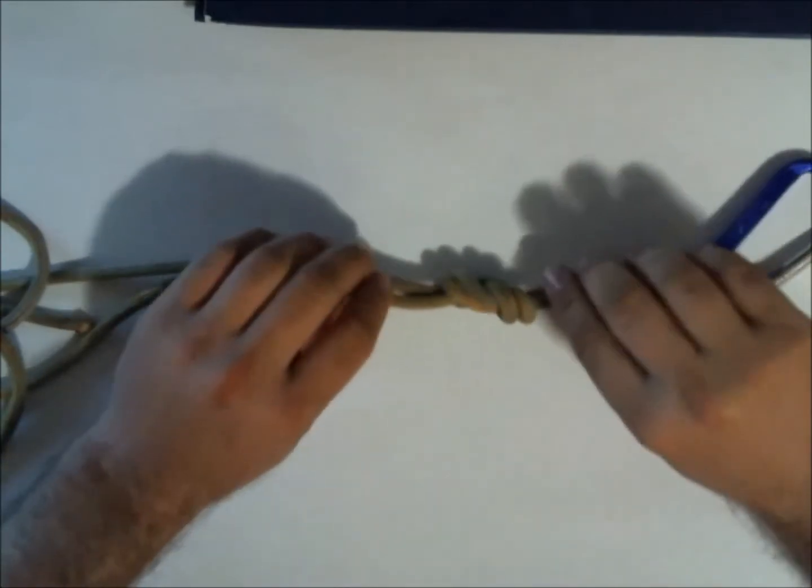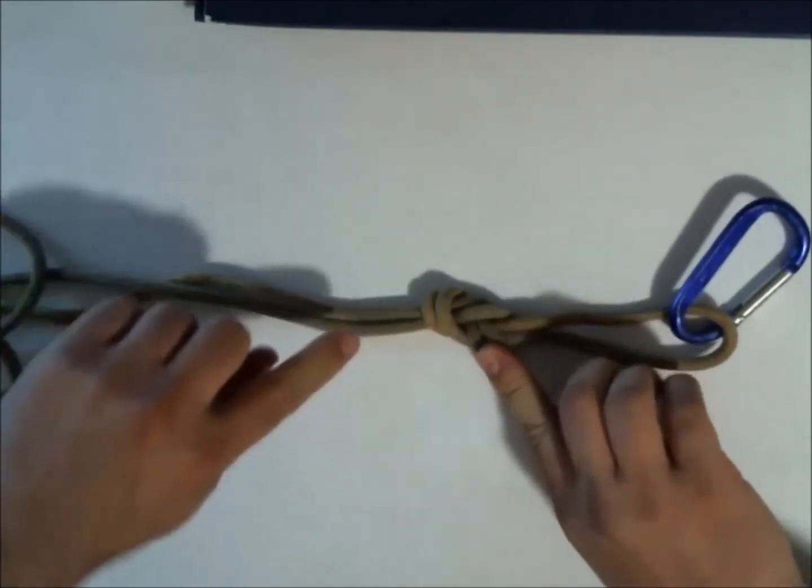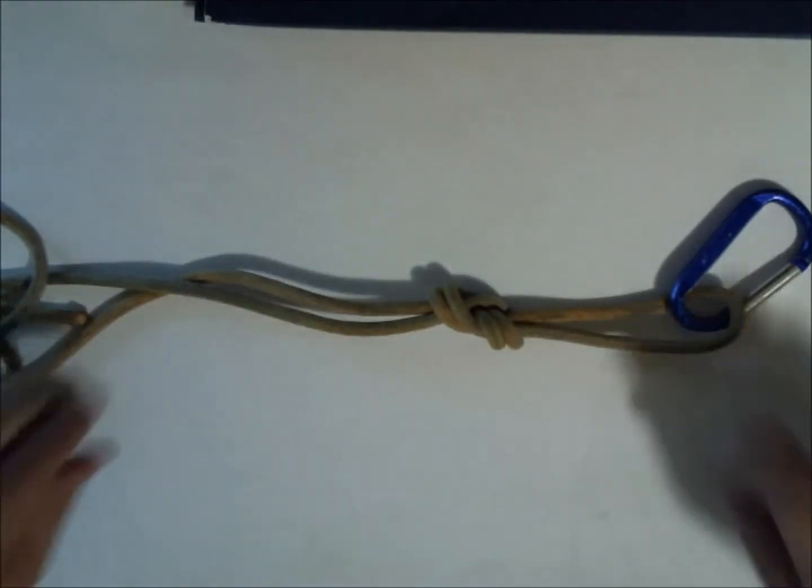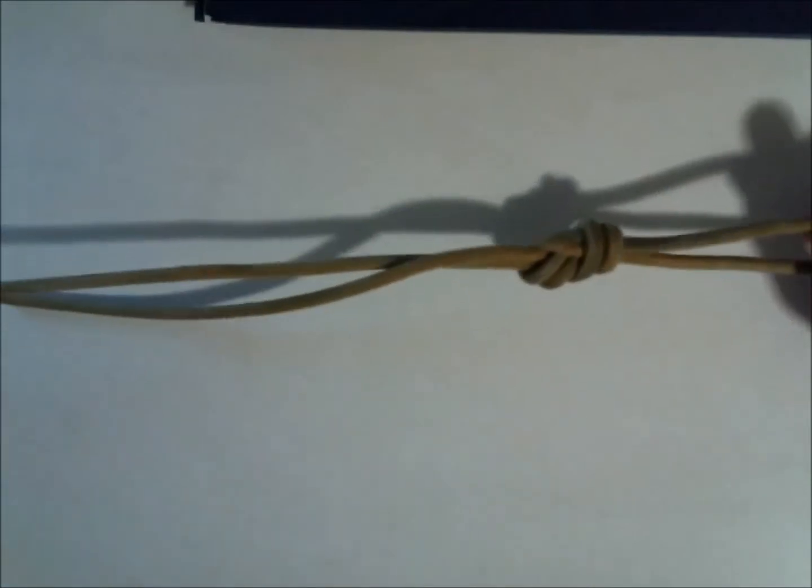I should turn the knot over and it should look the same: one, two, three, four, five. That's how I can verify a correctly tied double figure eight knot.